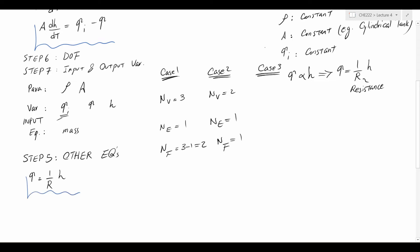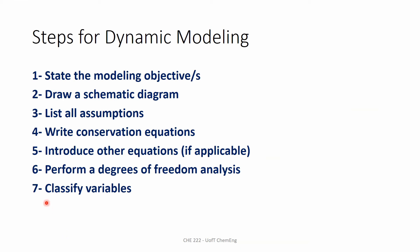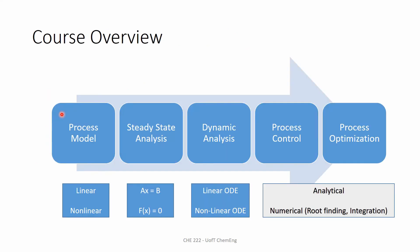In Case 3: number of unknown variables is still 2, number of equations becomes 2, and degrees of freedom becomes 0. The system is exactly specified and we can find one solution point. We have satisfied all steps for dynamic modeling and can now move on to solving the equations, which is in this case a linear ordinary differential equation, and then analyze the steady state and transient response.